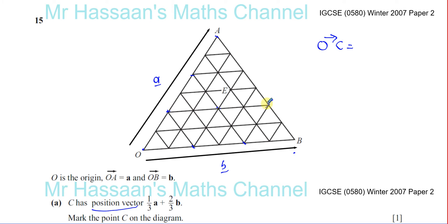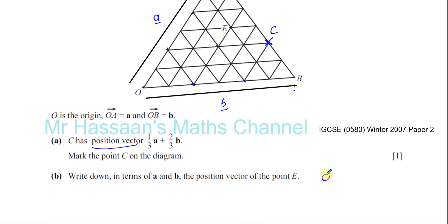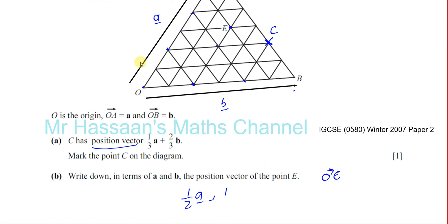Part B: write down in terms of **a** and **b** the position vector of point E. The position vector of E means the vector from O to E. E is at a specific point: to get there you go three squares along the direction of **a**, which is half of **a** since **a** is made up of six squares. Then you go two squares along **b**, which is one third of **b** since it's two out of six sections. So the position vector of E is ½**a** + ⅓**b**.